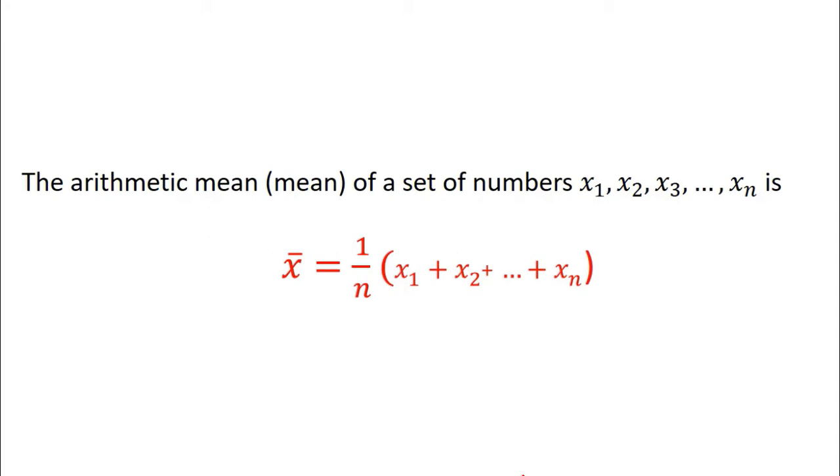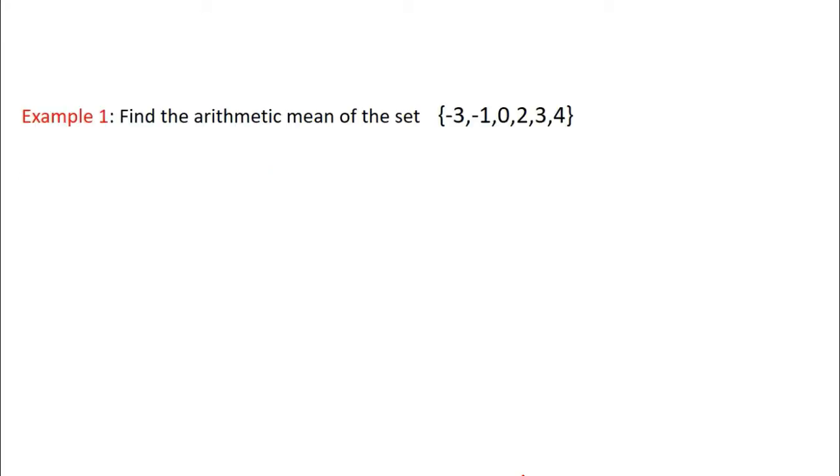So we're going to do a quick example. Find the arithmetic mean of this set of numbers. x bar is just equal to 1 over 6 times minus 3 plus minus 1 plus 0 plus 2 plus 3 plus 4, all divided by 6, and that's just 5 over 6.